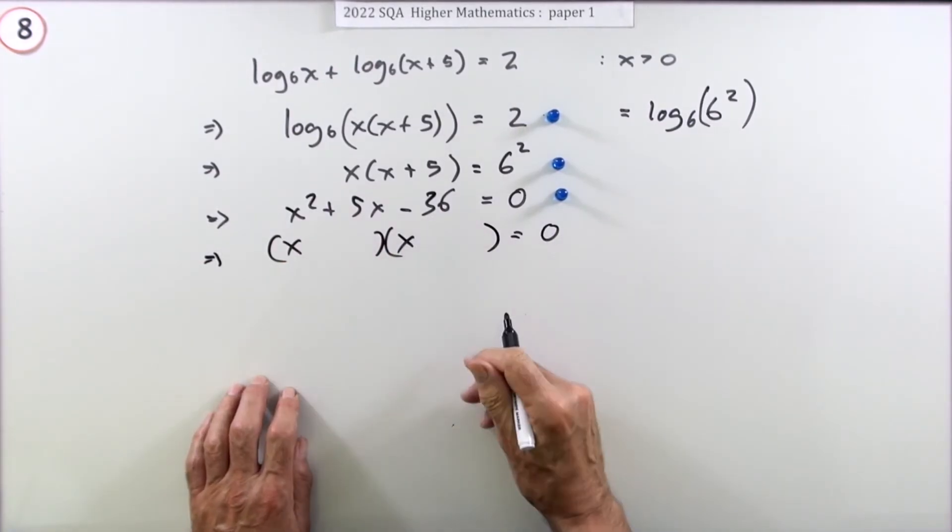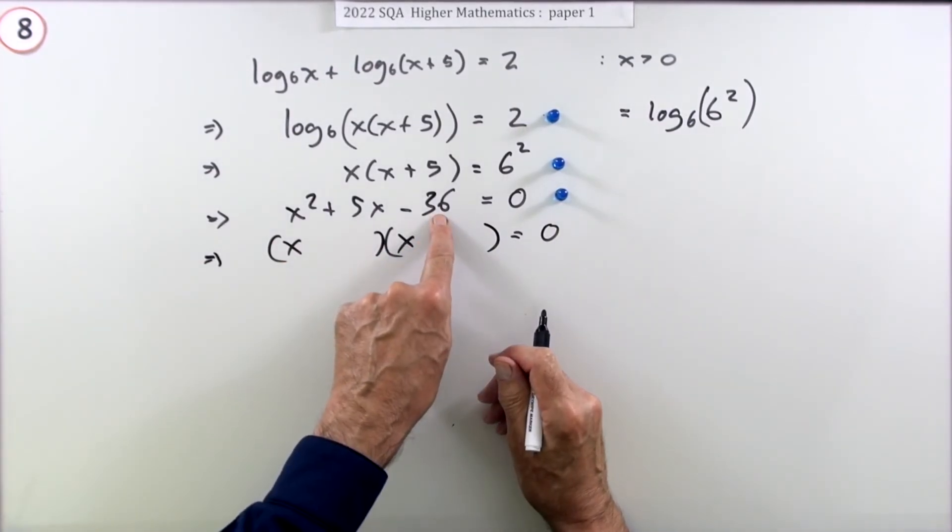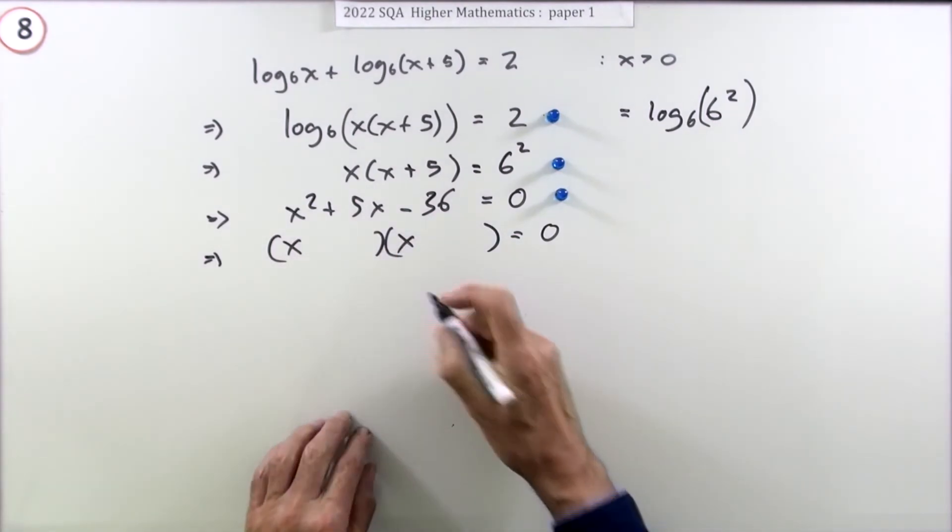Well obviously it's x times x, and you've got multiply to give 36 with a difference of 5 - that's 4 and 9. So it must be plus the 9 minus the 4.